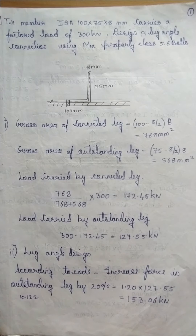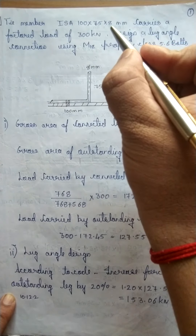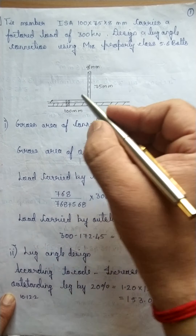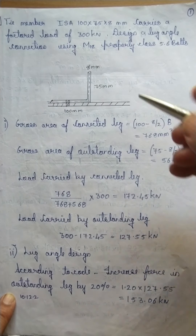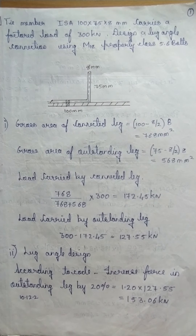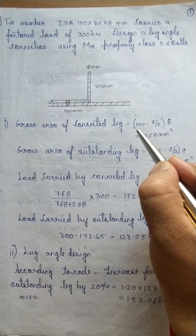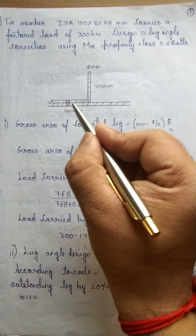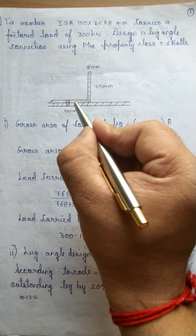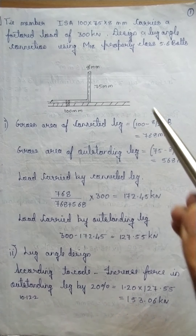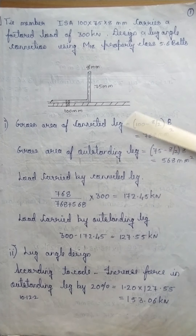The first step is to find out how much force is carried by the outstanding leg. The angle is 100 by 75 by 8. The 100 mm leg is connected to the gusset plate, so this becomes the connected leg, and the 75 mm leg is the outstanding leg. Gross area of the connected leg: (100 − 8/2) × 8 = 768 mm². Gross area of the outstanding leg: (75 − 8/2) × 8. We now divide the total area into these components.